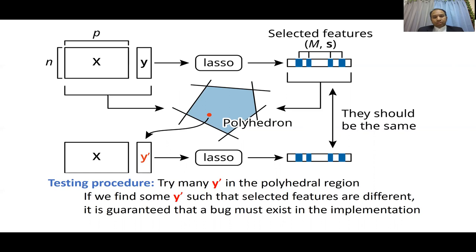In the Foley-Hydro region, we try to create many Y', and Y' is exactly the same in selected features. But if any Y' are different from the original selected features, that means a bug must exist in the implementation. And that is our main achievement of this research. Thank you very much.